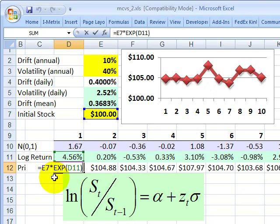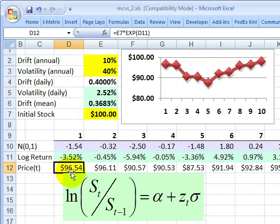And that gives me my log return. And finally, here, I simply multiply today's price of 100 by e raised to that return or the exponential function. And that gives me tomorrow's price.